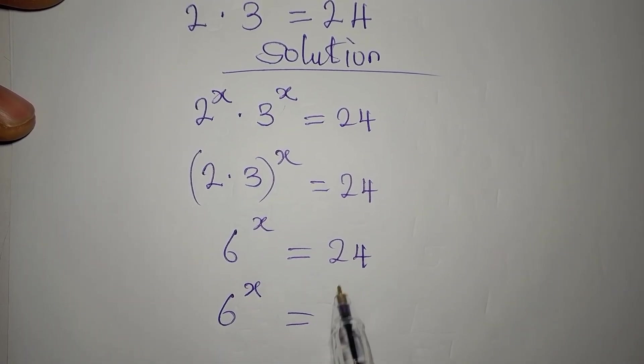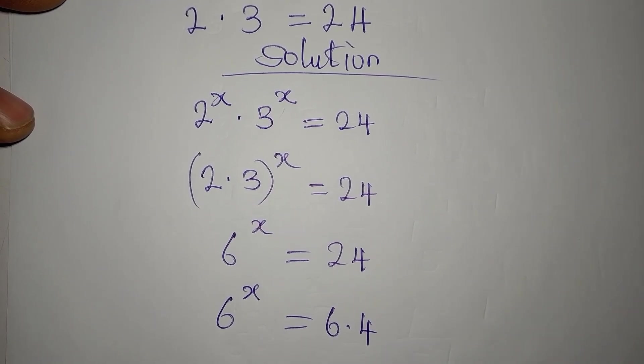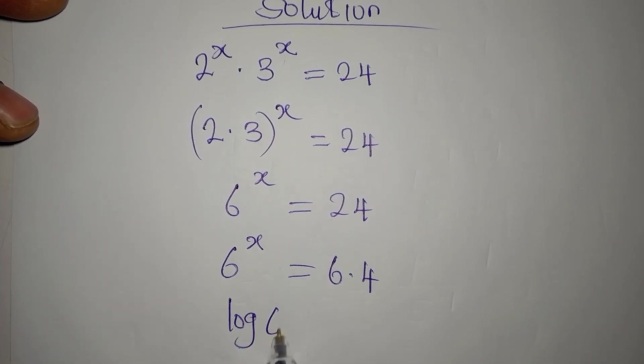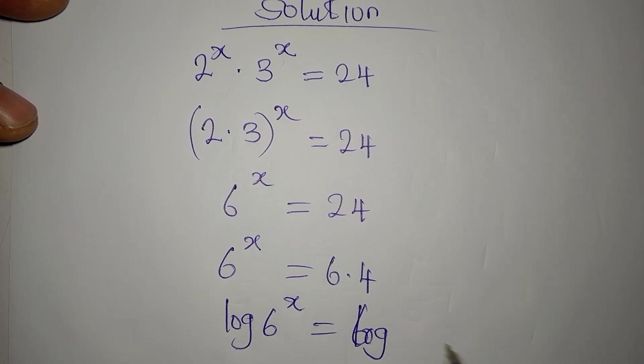So what we'll do now is take the log of both sides: log 6 to the power of x equals log of 6 times 4.